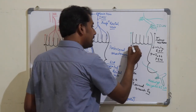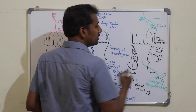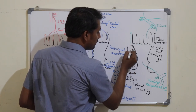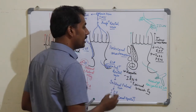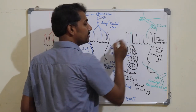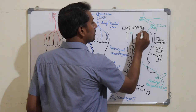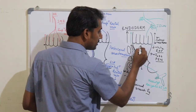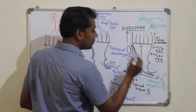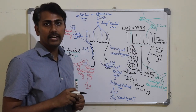The internal anal sphincter, located above, is supplied by the autonomic nerves and therefore is involuntary in nature. The external anal sphincter is supplied by the somatic nerves and therefore is voluntary in nature. Embryologically, the part above the pectinate line develops from the endoderm, and the part below the pectinate line develops from the ectoderm. So we can see how this pectinate line is a very important landmark in the anal canal.